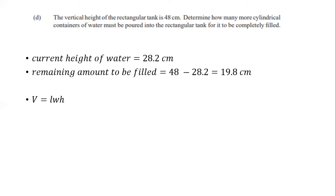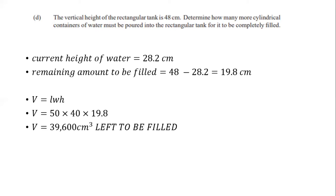Using the rectangular tank formula — volume equals length times width times height — we calculate the volume corresponding to the remaining height of 19.8 cm. The length and width are still 50 by 40, and the height to be filled is 19.8 cm. This gives us 39,600 cm³ as the volume still left to be filled.